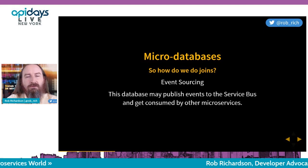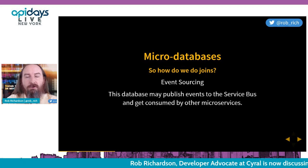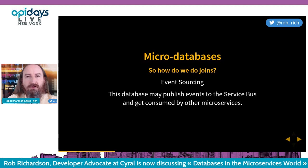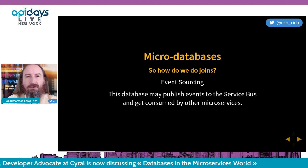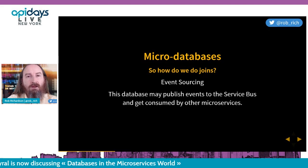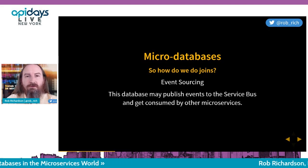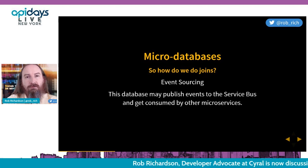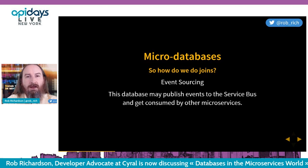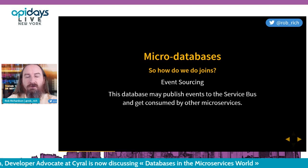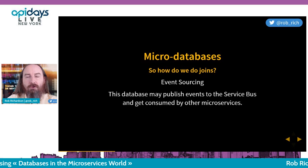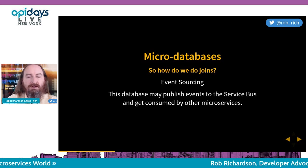Instead, let's create an event store. This event store stores all of the events that happen in our system, and at each stage we can publish events that respond to different items in our task. One or more services listen to those events and take additional actions. Our reporting service — the one that needs to do joins — can listen to all relevant events and create a denormalized view of the data. So when it comes time to build a report, we don't need to join across different micro databases; we already have the data we need.